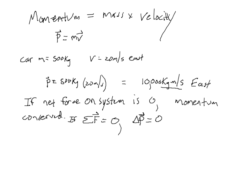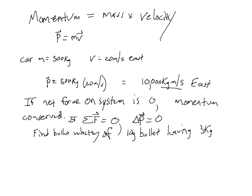Let's do an example. We want to find the bullet velocity of a ten-gram bullet that is leaving a three-kilogram rifle, if the rifle recoils at one meter per second.